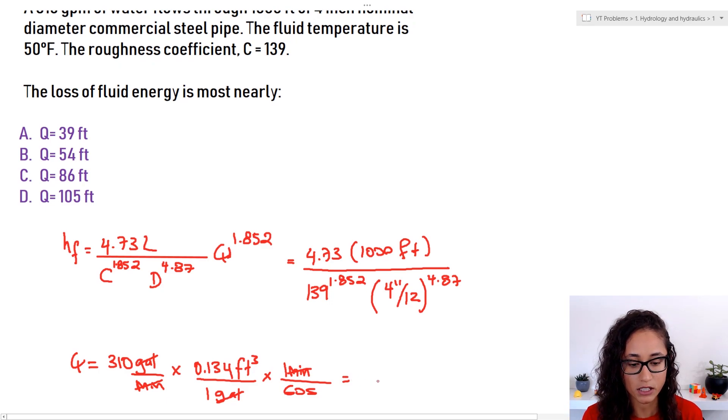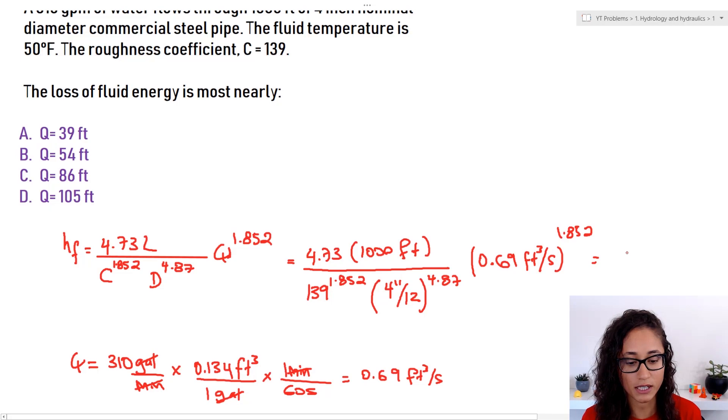So if you multiply this, you should get about 0.69 cubic feet per second. Okay. So let's go back here, original equation and plug in 0.69 cubic feet per second. And this is to the power of 1.852. So if you guys plug in this, you will get about 54 feet. So the answer is going to be B.